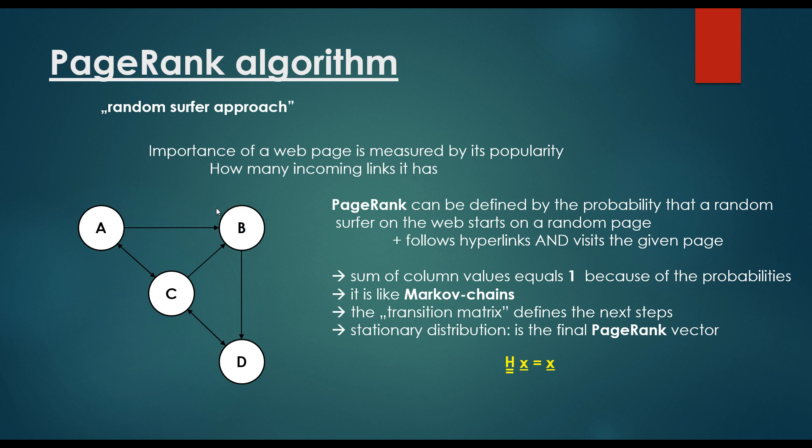Okay, if the given surfer is standing on website B, it has no other option than visiting website D. So that's why with 1 probability, it is going to visit D. Again, it has no other choice but to visit C, and so on.